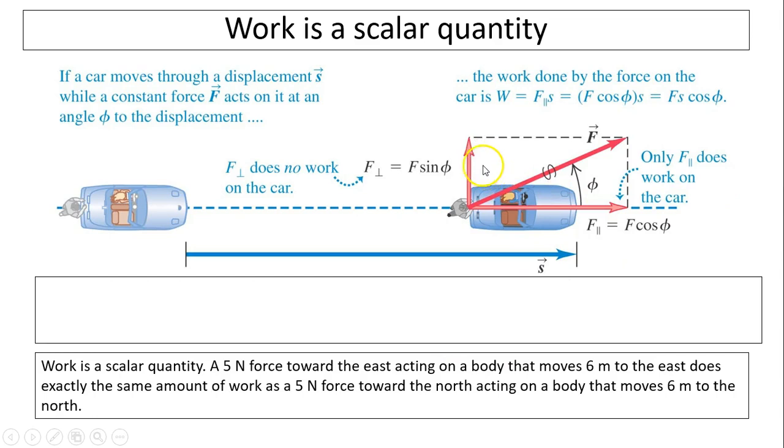If a car moves through a displacement s while a constant force acts on it at an angle to the displacement, this force has two components: one parallel to the displacement and one perpendicular. Only the parallel force causes the displacement. The perpendicular force does not cause any displacement. So the work done equals F parallel times displacement.